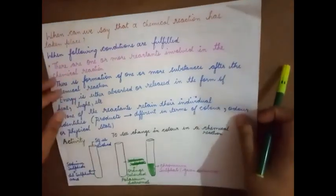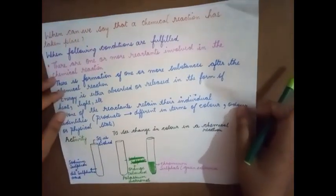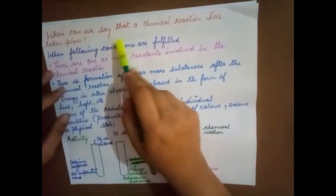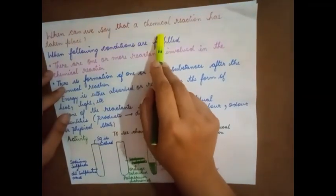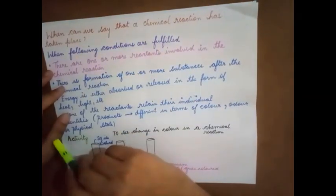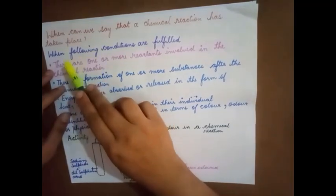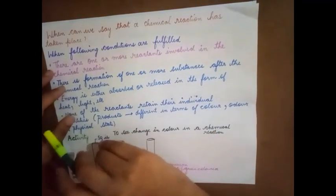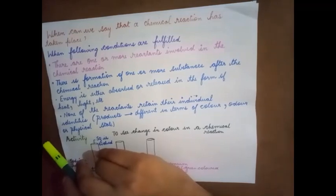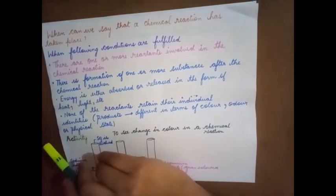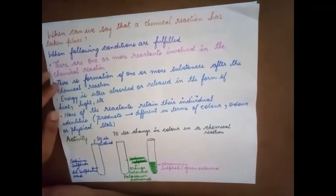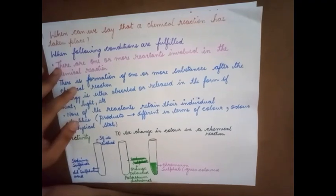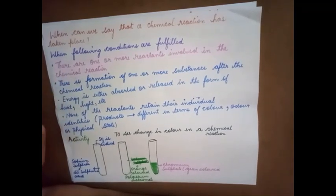This is with respect to the characteristics of a chemical reaction. When can we say that a chemical reaction has taken place? The following conditions need to be fulfilled. There are certain conditions that must be fulfilled for a chemical reaction to happen, otherwise the chemical reaction will not take place.